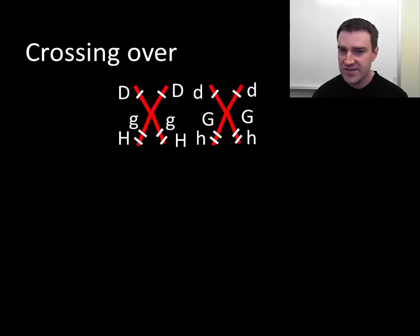And then there's this other event called crossing over that also occurs during meiosis one. That also happens to take advantage of the side-by-side lining up of the homologous pairs.